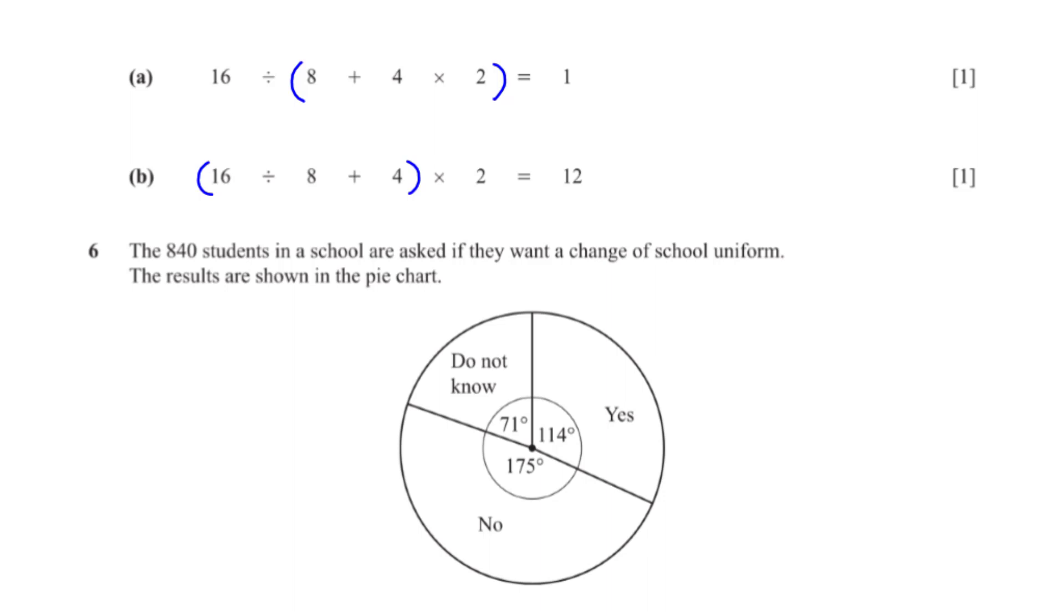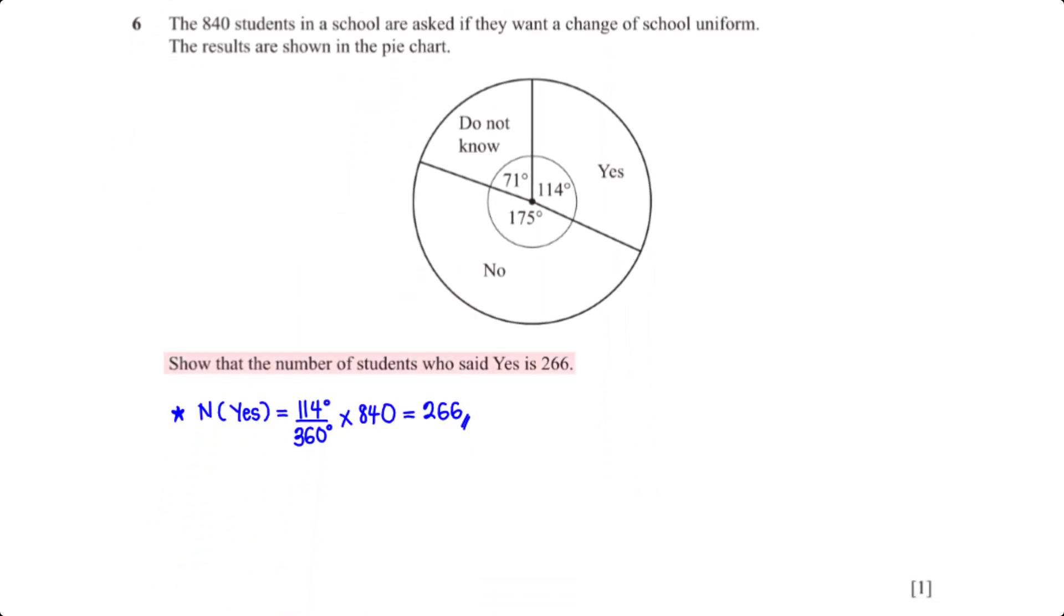The 840 students in the school are asked if they want a change of school uniform. The results are shown in the pie chart. Show that the number of students who said yes is 266. To get this number, we divide the sector angle for the students who said yes, which is 114 degrees, by 360 degrees and multiply by 840. This gives us 266.